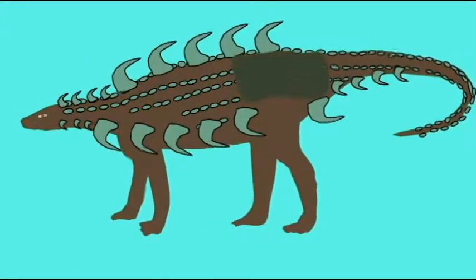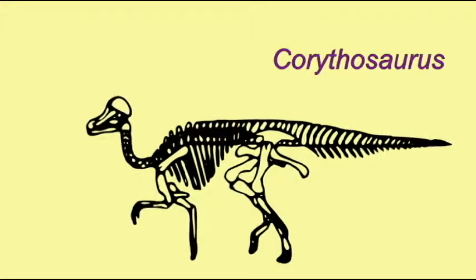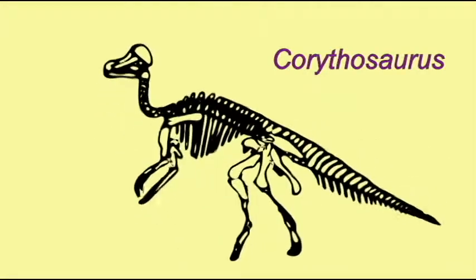The ornithopods could be both bipedal and quadrupedal, so many were capable of both forms of locomotion.